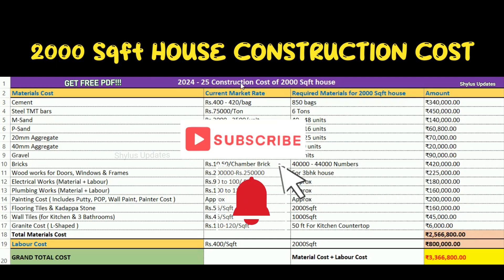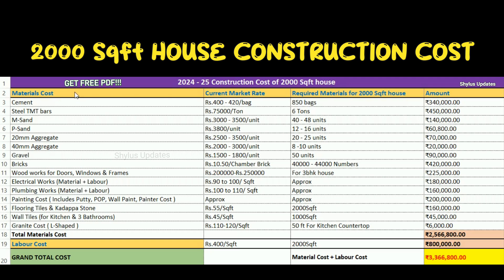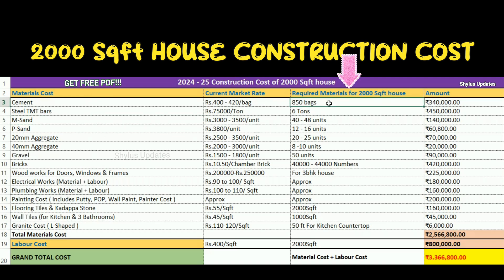The 2024-2025 construction cost of a 2,000 square feet house has been calculated in an Excel sheet. In the first column is the material cost, in the second column is the current market rate, in the third column is the required materials for a 2,000 square feet house, and in the fourth column is the total amount.